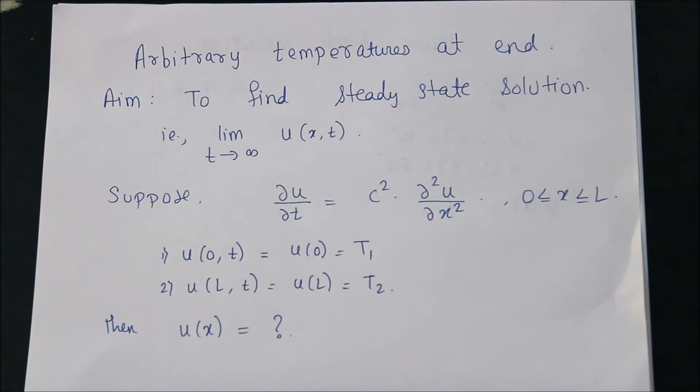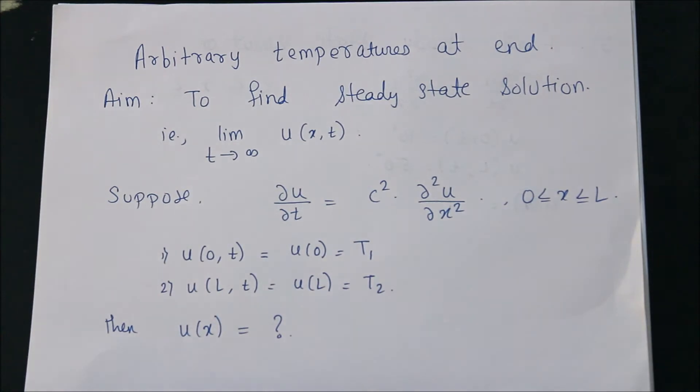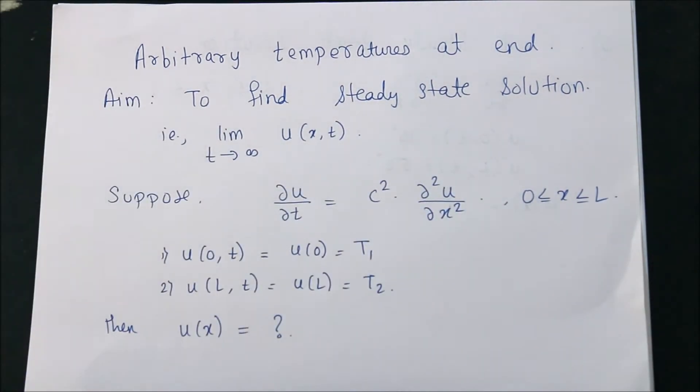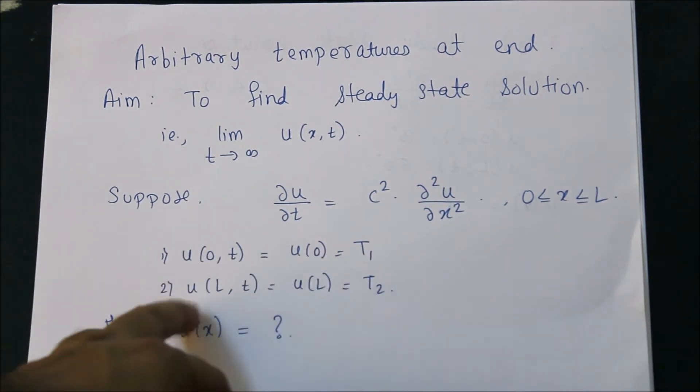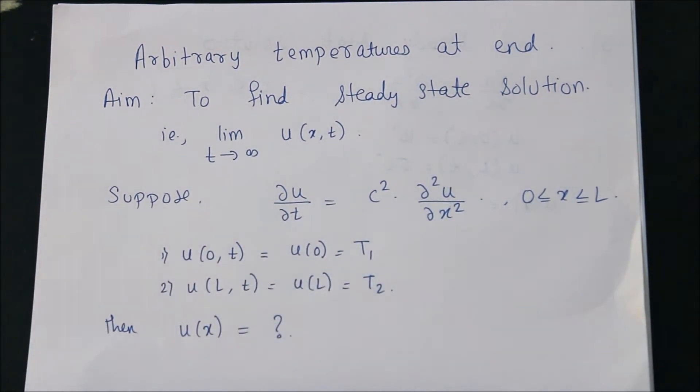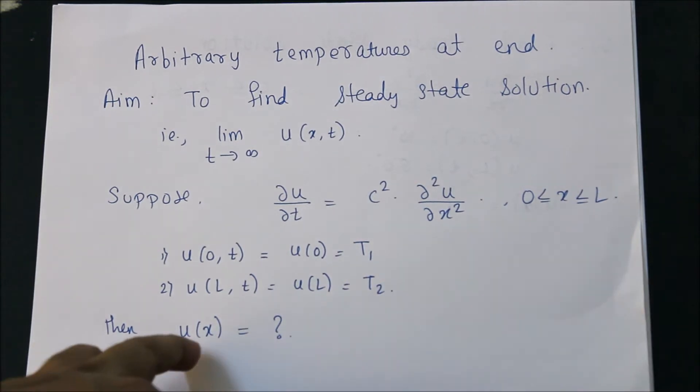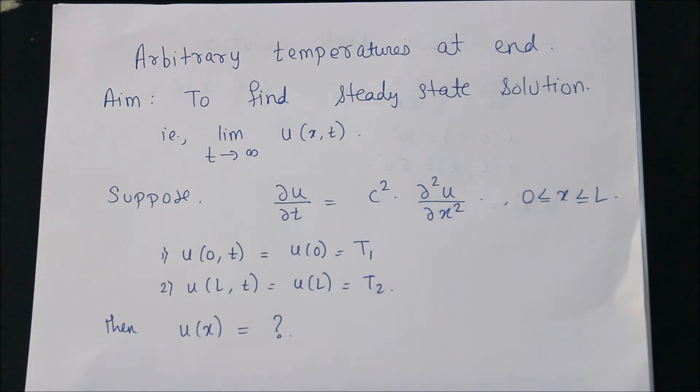Today we're going to derive a formula for steady state solution. Suppose you have a heat equation with a rod or wire of length L, and initially the temperature is T1 and at the end the temperature is T2. Then what is U of X?